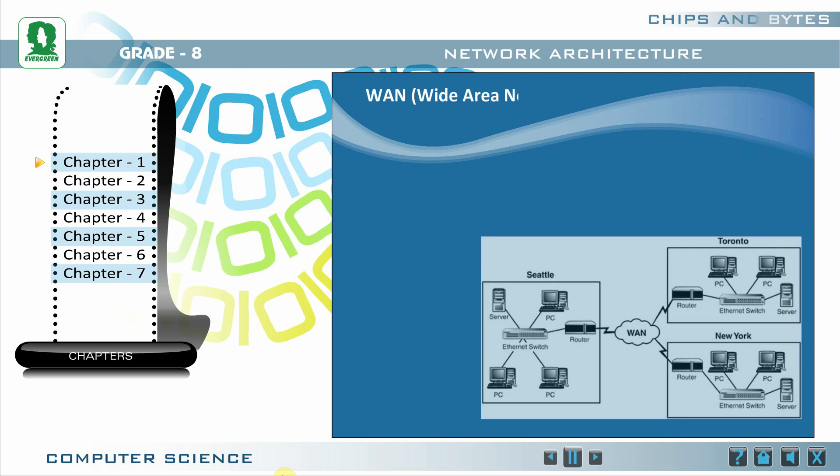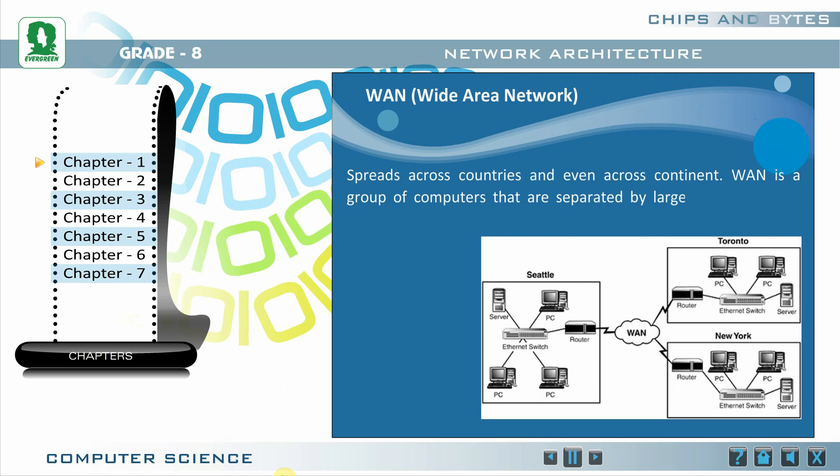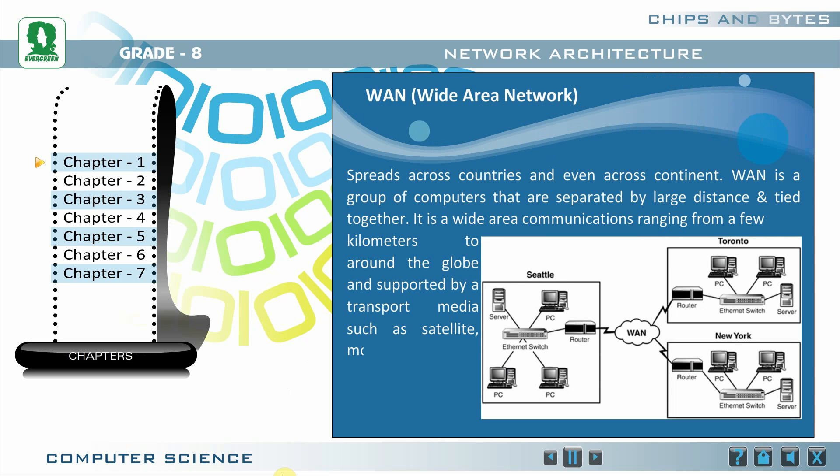WAN (Wide Area Network): It spreads across countries and even across continents. WAN is a group of computers that are separated by large distance and tied together. WAN is wide area communications ranging from a few kilometers to around the globe and supported by transport media such as satellites, modems, network control centers, etc.